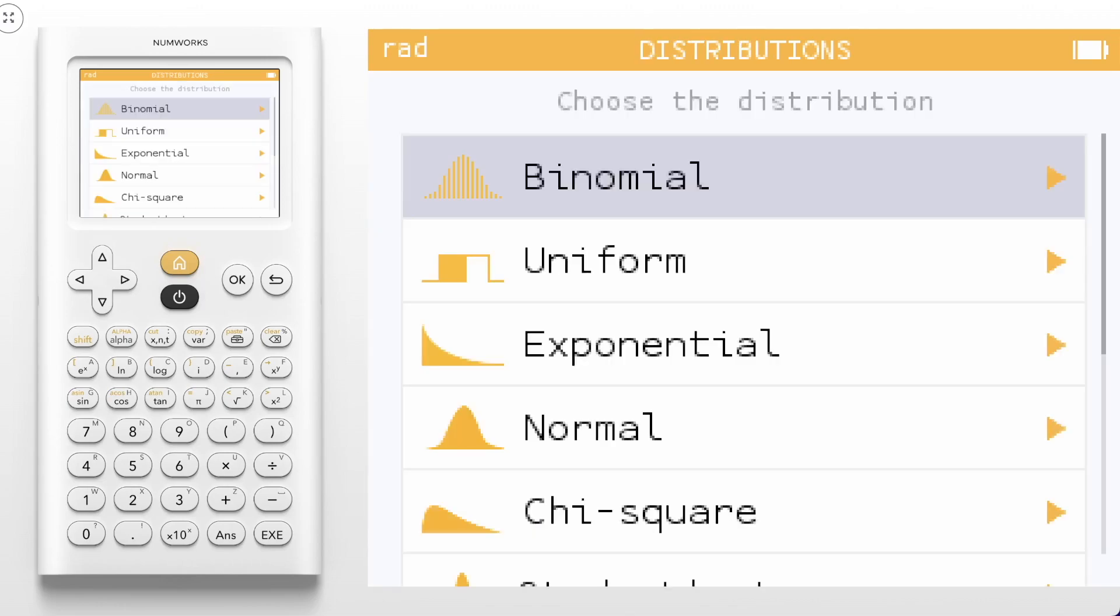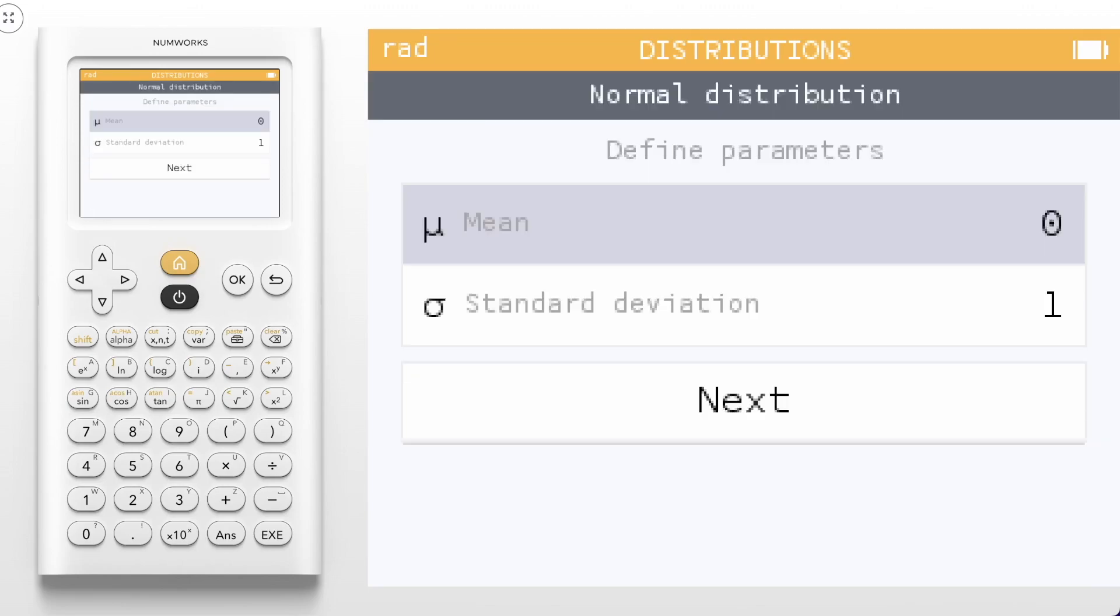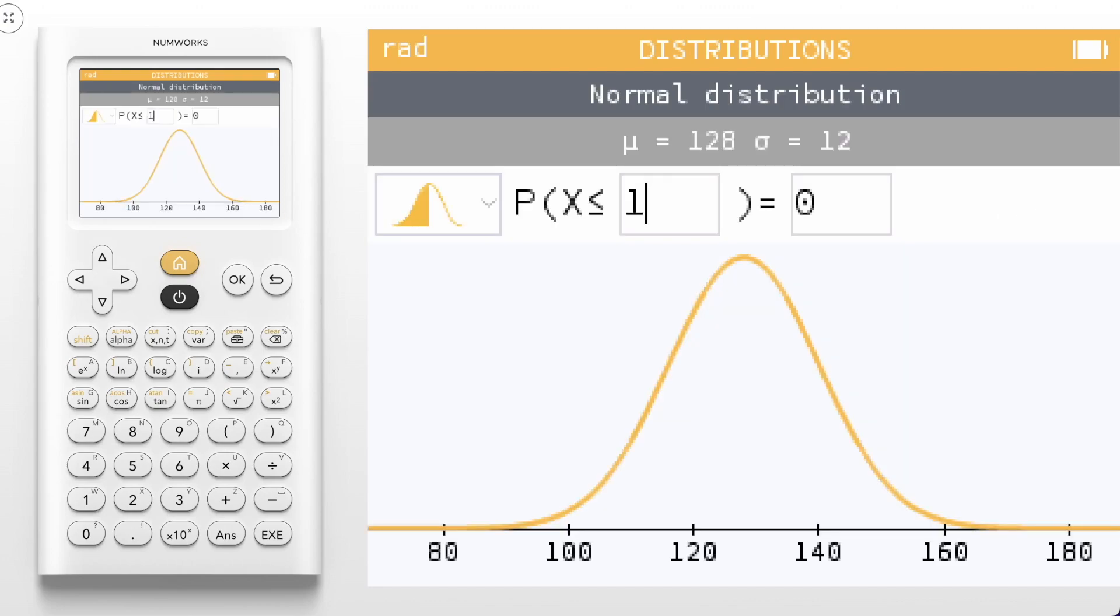For example, in distributions, we can select one of the many probability distributions. First, we'll enter some parameters and then enter an x value to output a probability, or we could even enter the probability to get the corresponding x value.